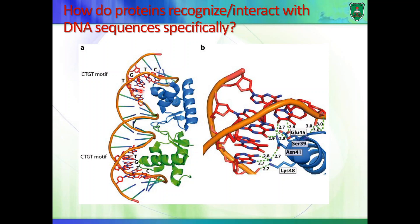Notice that proteins preferably interact with bases of DNA in the major groove, because they can insert themselves within the major groove and become close to the bases of DNA. This is how proteins interact with DNA specifically. If you understand this concept, we can then apply it to eukaryotic systems, which are more complex. We'll stop here and continue in the next lecture.